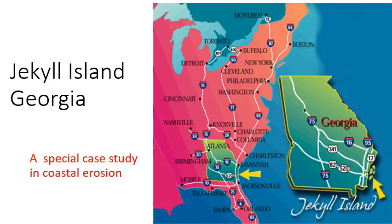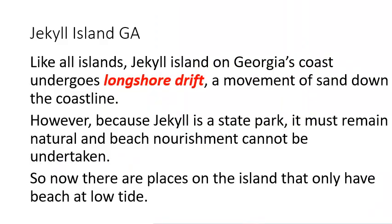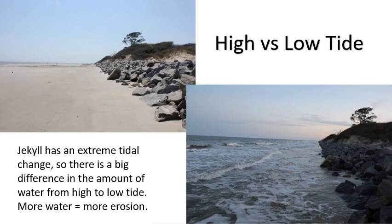Jekyll Island, Georgia is a great case study in coastal erosion. It's a state park with a beach, and because it's a state park, they can't do beach nourishment — it has to stay in its natural state. There are also no large hotels willing to pay for beach nourishment. Like all islands, they have longshore drift, so their beach is getting moved around. There are some places on Jekyll where you only have a beach at low tide. The whole northern end has very extreme tides and a big difference in water level, causing big erosion problems.